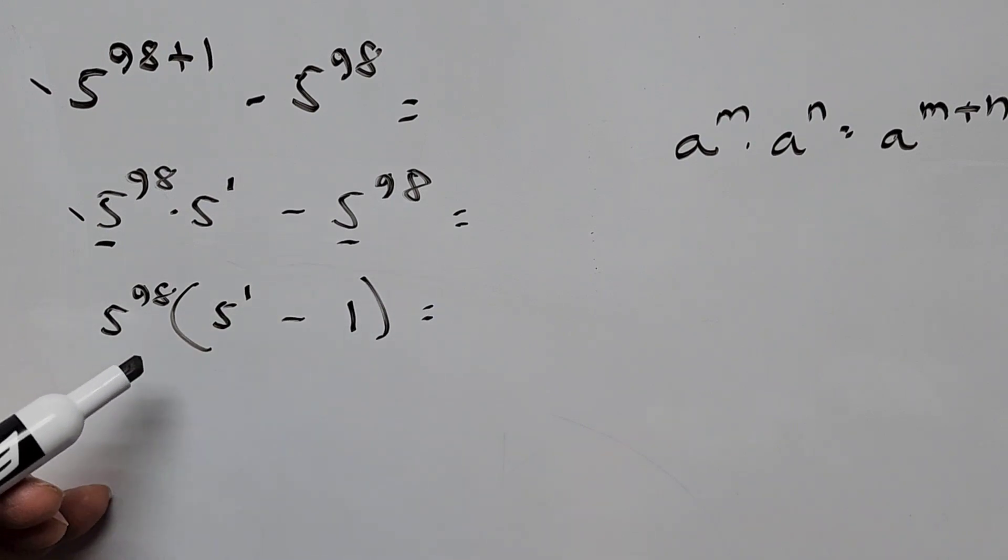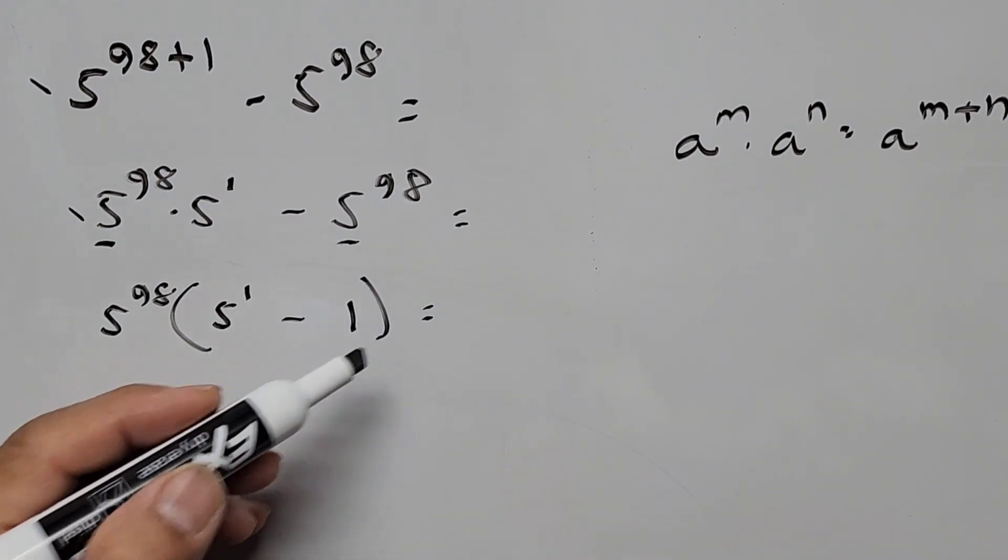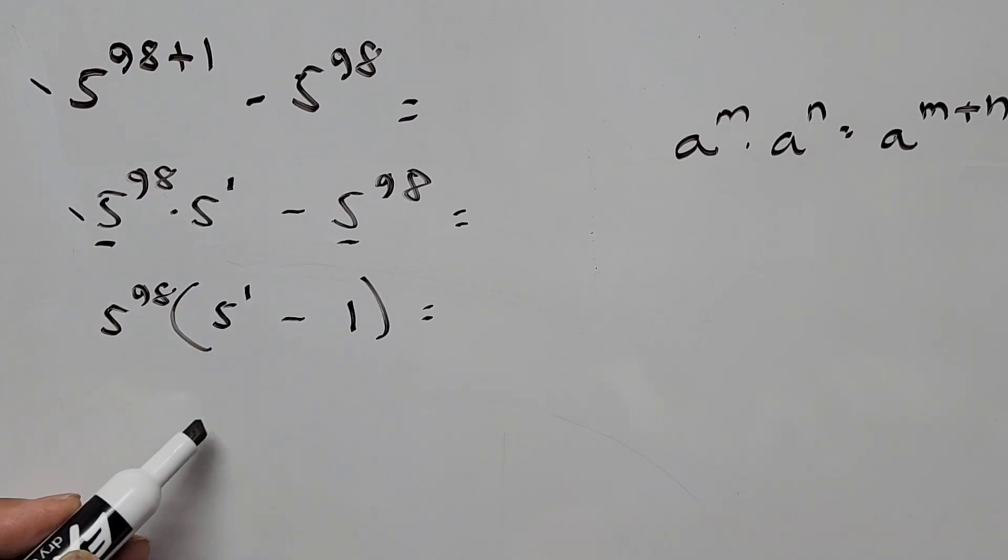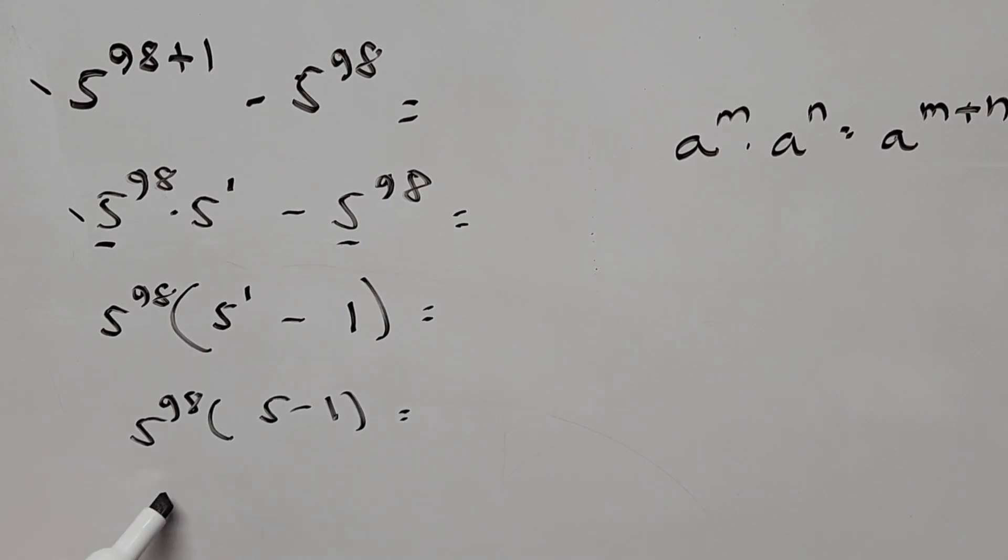And then 5 to the power of 98 times 5 to the power of 1 minus 1 is simply 5 minus 1. So this is now 5 to the power of 98 times 5 minus 1 is 4. So this is now 4 times 5 to the power of 98.